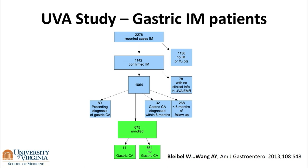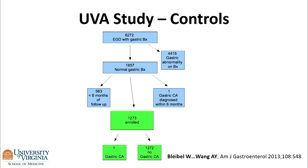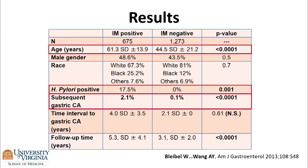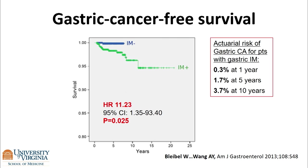We looked further at patients with pathologically diagnosed IM on biopsies from EGD for any reason — distilling this down to 675 patients, 14 of whom over time went on to develop cancer. We compared a controlled group of biopsy-proven patients with normal stomachs, over 1,200, of whom only one went on to develop cancer. The actuarial risk of gastric cancer progression from IM to cancer in our population was 0.3% at 1 year, 1.7% at 5 years, and 3.7% at 10 years. So even in central Virginia, it's a problem.